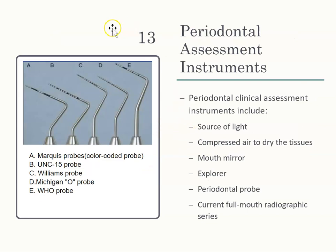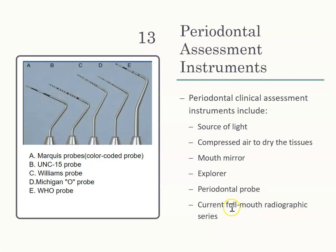Periodontal assessment instruments. We use many different types to do our perio assessment. We need light, air to dry the tissues to see where calculus is and assess gum consistency. We need a mirror, an explorer, a probe, and an FMS or radiographs. You need radiographs in order to determine the client's perio condition.